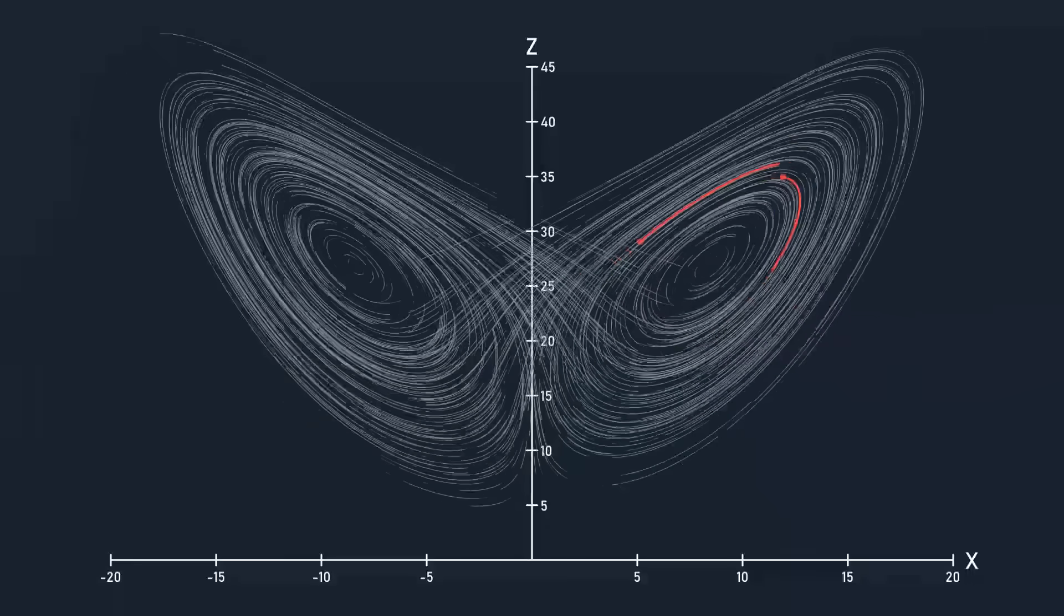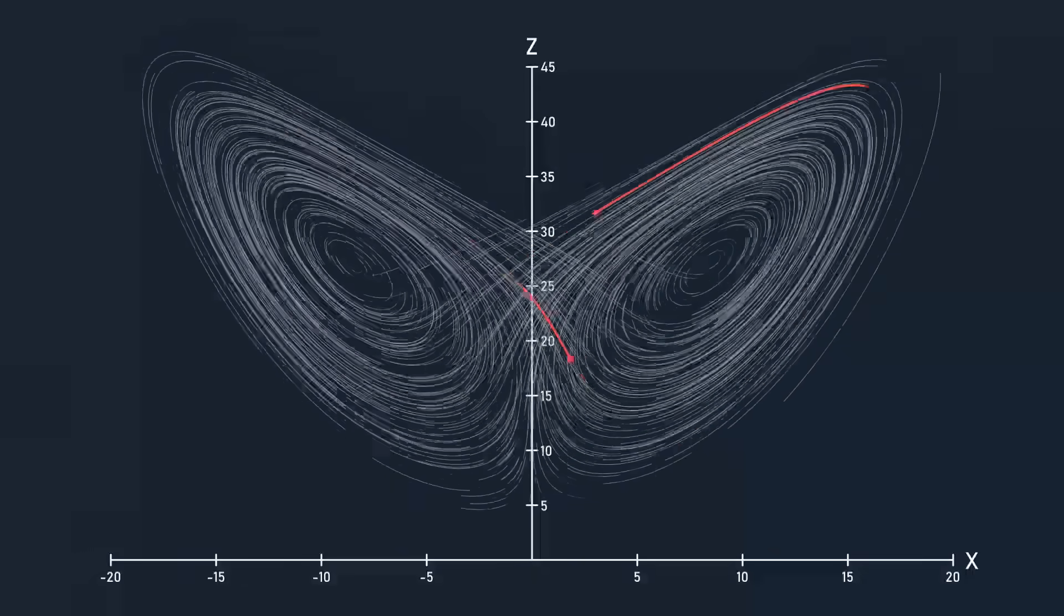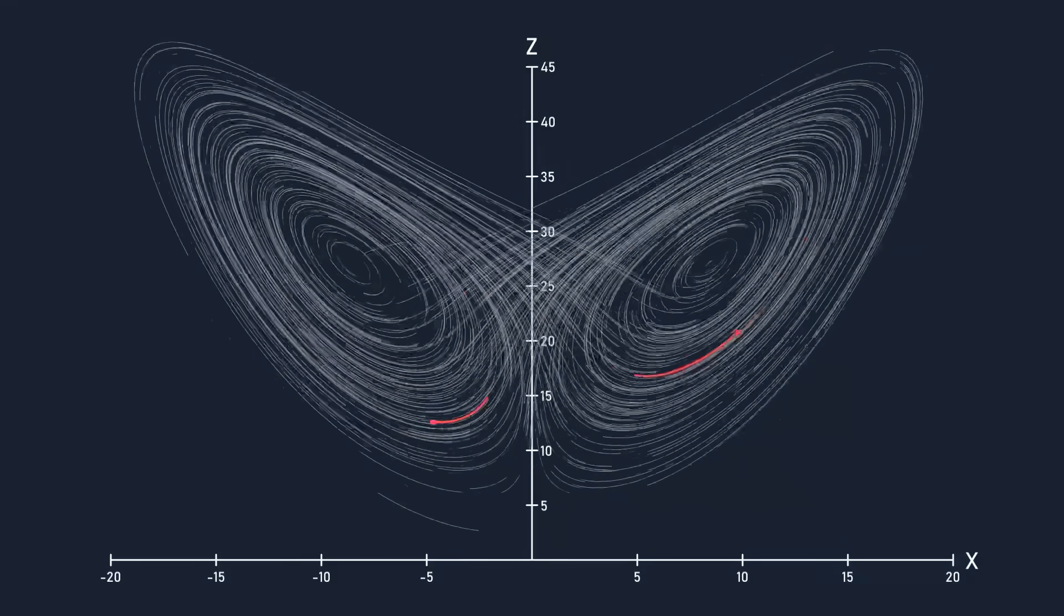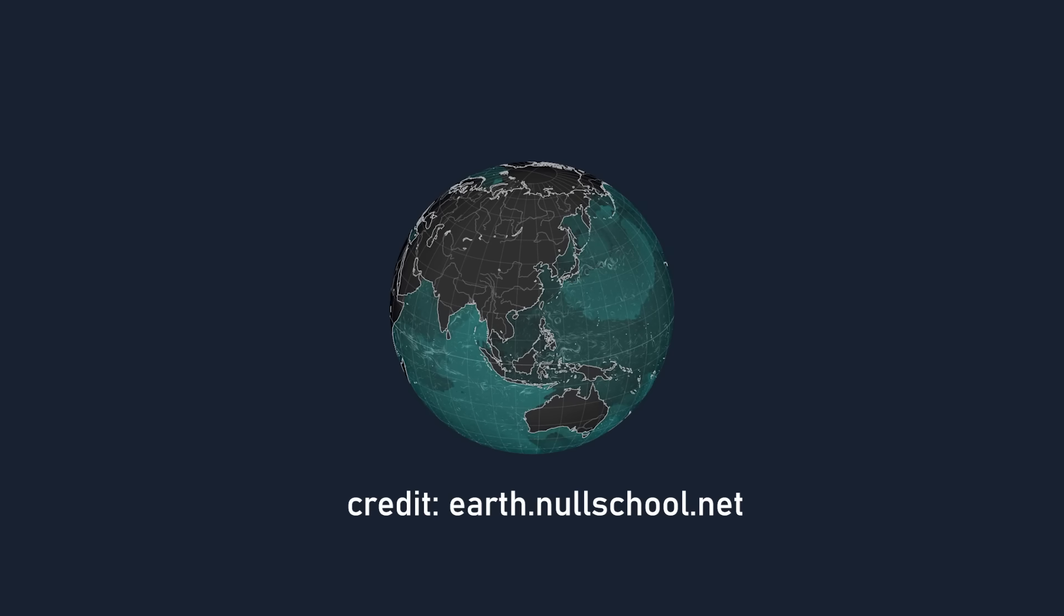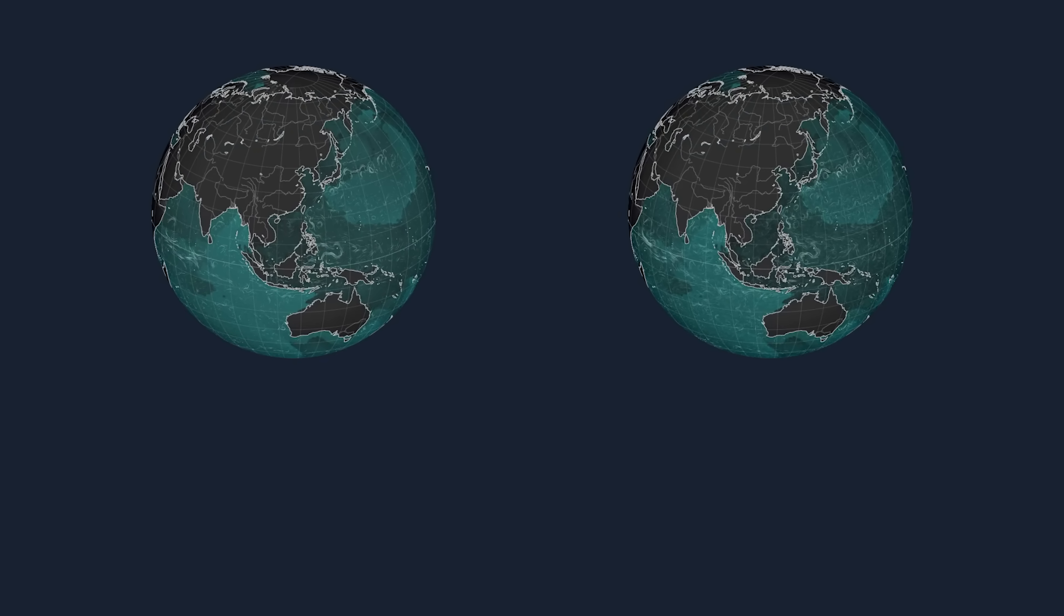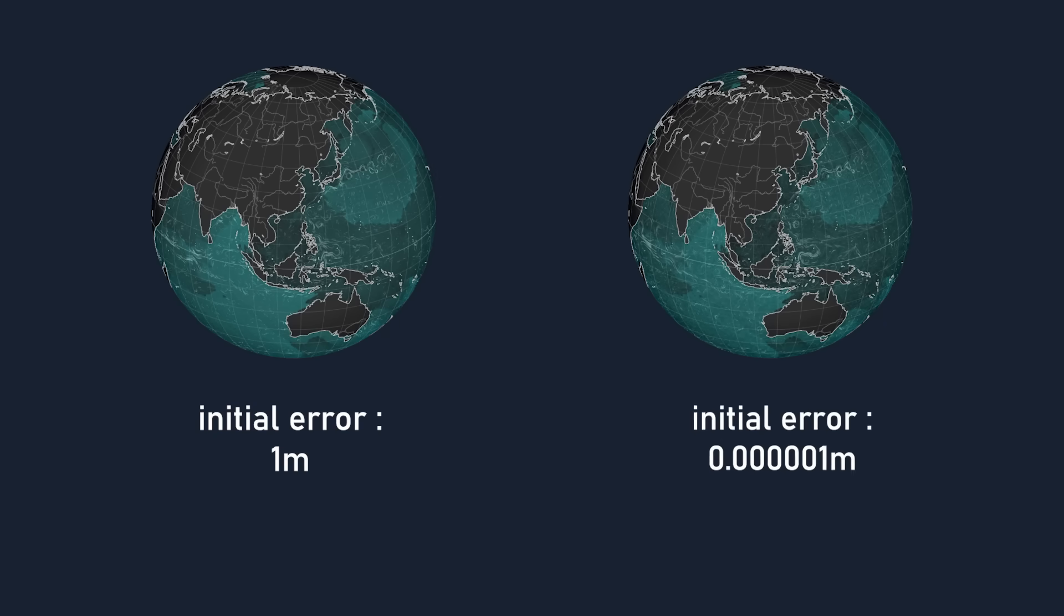To get an idea of how hard it is to make accurate predictions over long periods of time with this exponential divergence, let's say you had a simulation that predicts where ocean currents flow, and you wanted to keep the error less than 1000 meters. If you ran it twice, once with an initial error of 1 meter, and once with an initial error that was a million times smaller, at 1 micrometer, how much longer do you think the simulation with the smaller error would stay below the margin of error?